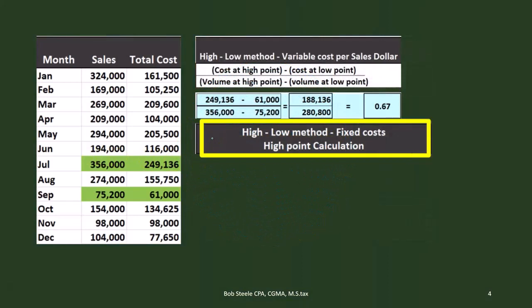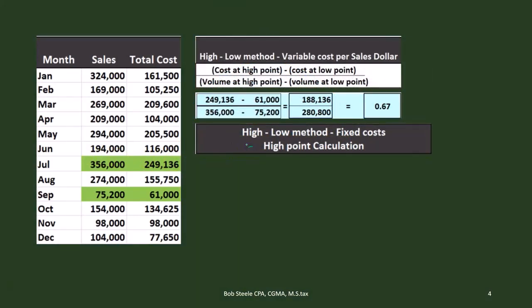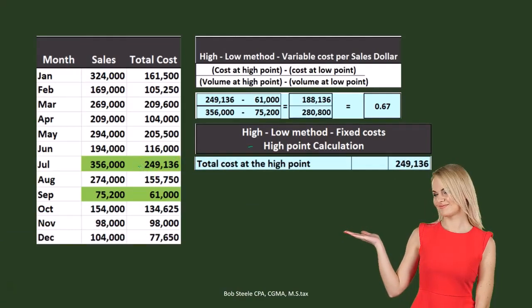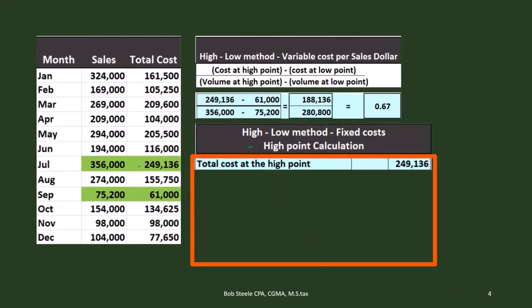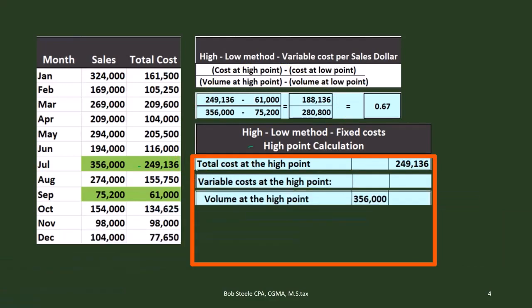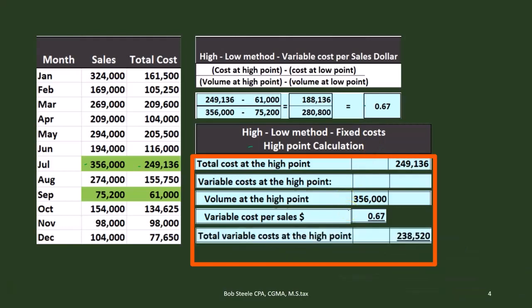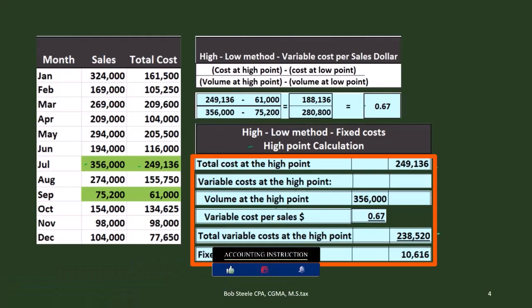Now we calculate using the high point. The total cost is $249,136, and we want to break it out between variable and fixed portions. For the variable cost at the high point, we take the volume at the high point — $356,000 in sales dollars — and multiply by the variable cost per sales dollar of $0.67, giving us $238,520. That's the variable portion. Subtracting from the total gives us a fixed portion of $10,616.